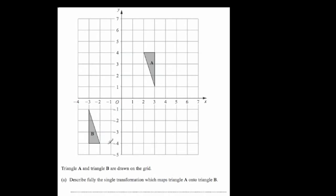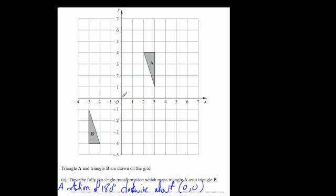Finally, describe fully the single transformation that maps A to B. Again, it's a rotation - because the top becomes the bottom, it's going to be 180 degrees. A rotation of 180 degrees clockwise about... Finding the centre of rotation: that's three across one up, and that's three across one down, so if you were to spin it round it would land on top of it. About the origin, (0, 0). With tracing paper you could quickly trace A, rotate it round, and you'd see that A would land onto B.